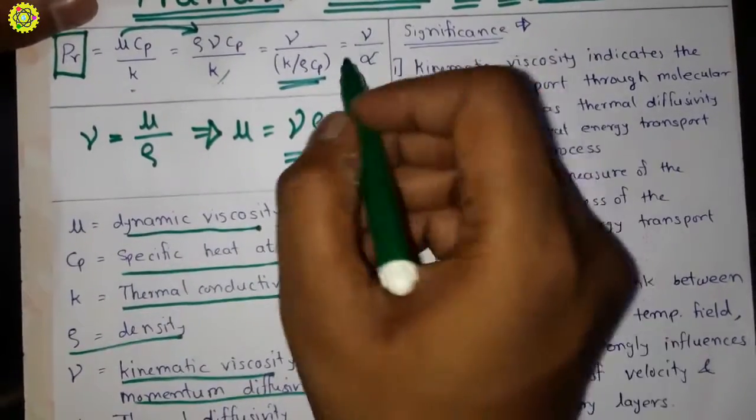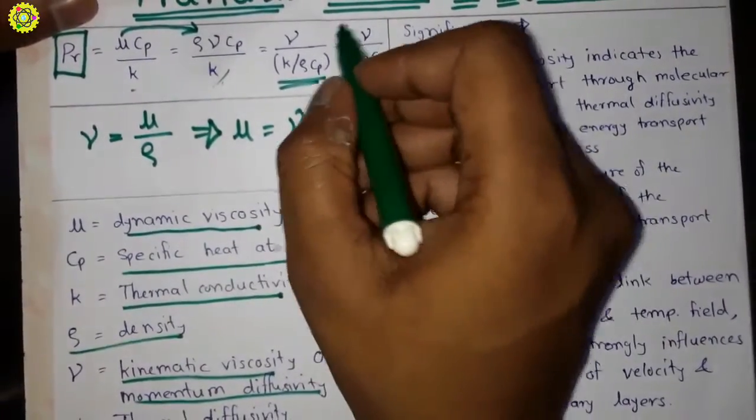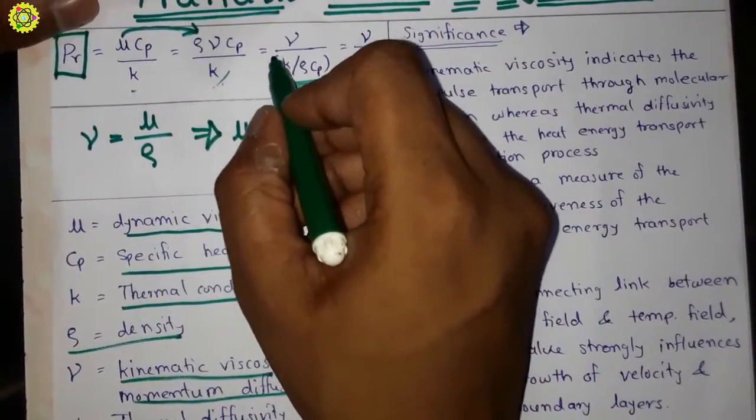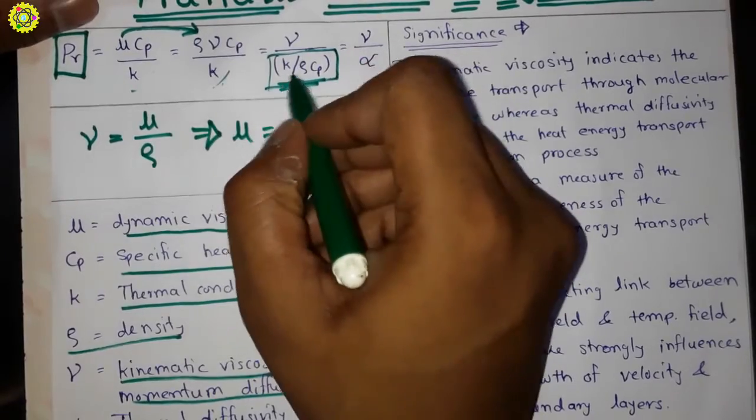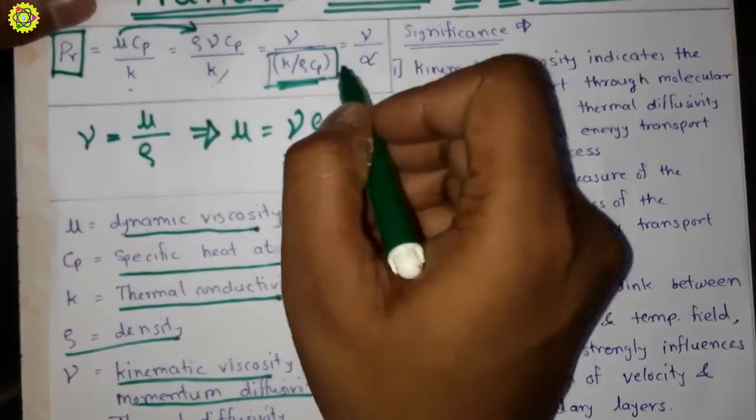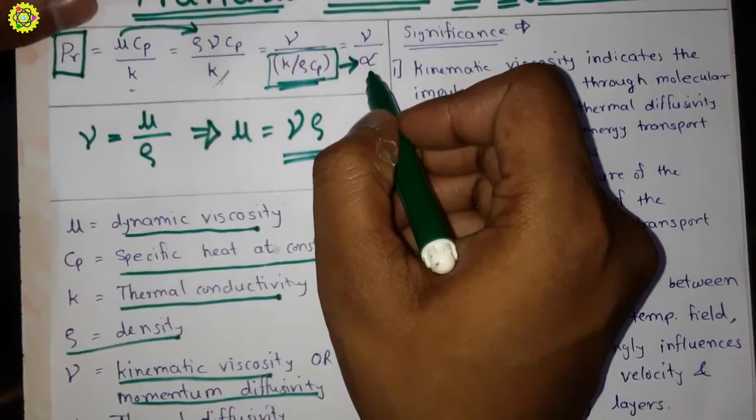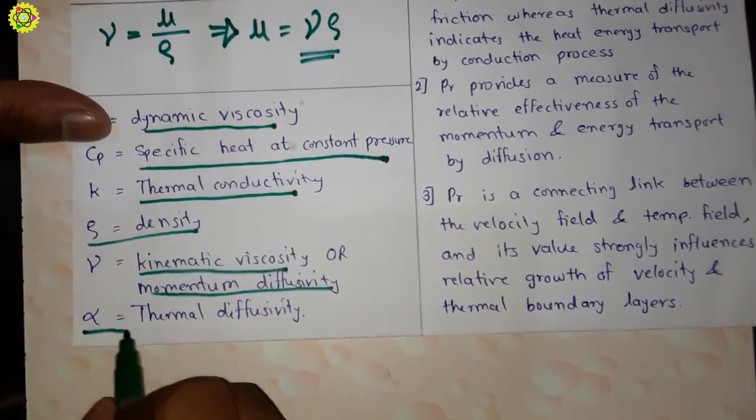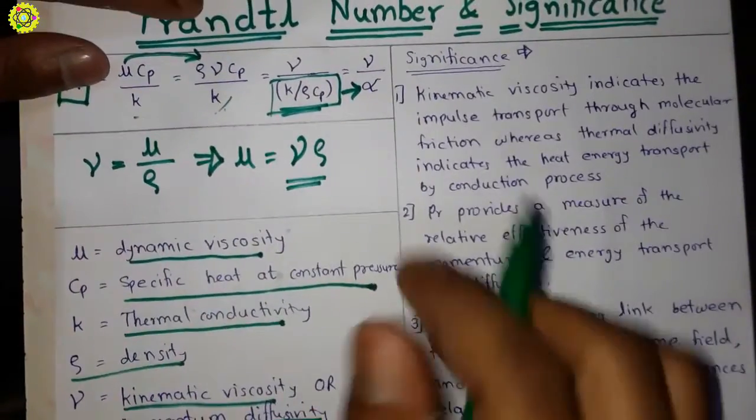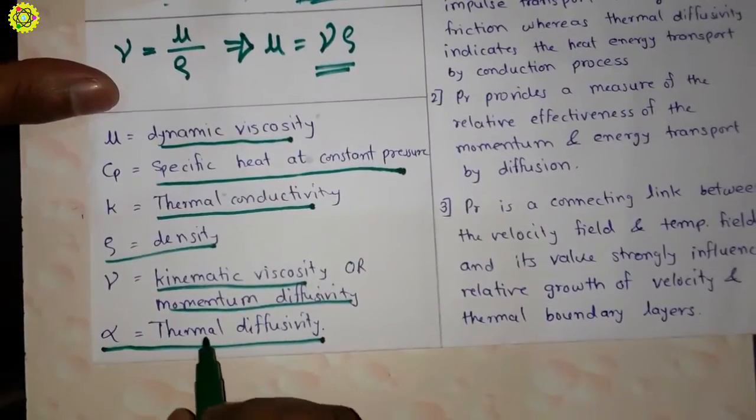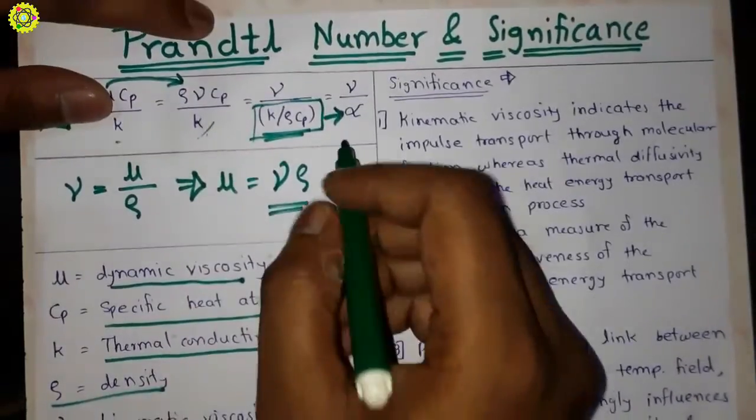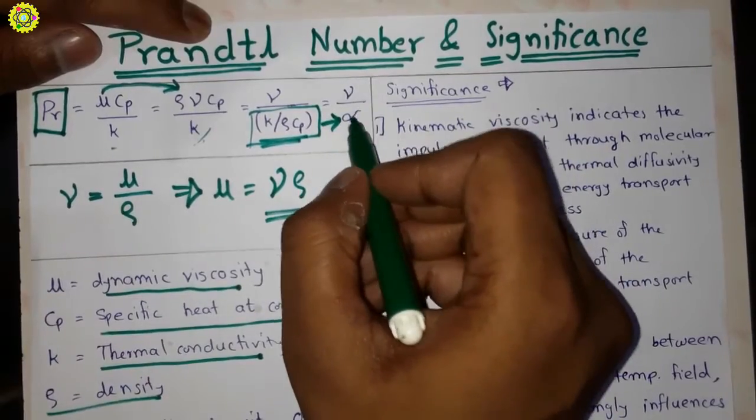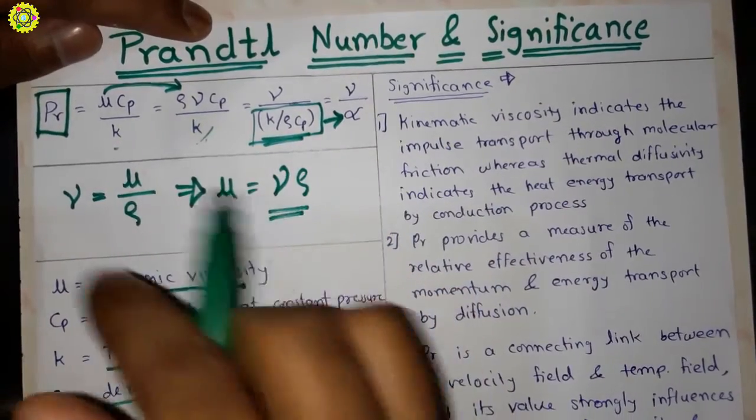...that is, this equation, this formula, that is K upon rho*CP is thermal diffusivity. As you can see here, thermal diffusivity symbol is alpha. So here the formula becomes nu upon alpha.